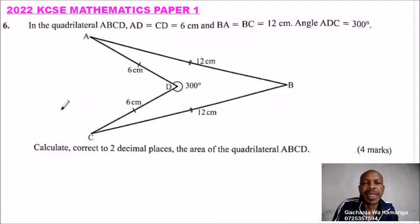So this is question number 6. In a quadrilateral, that is 2022 KCSE Mathematics Paper 1, and we are told in a quadrilateral,